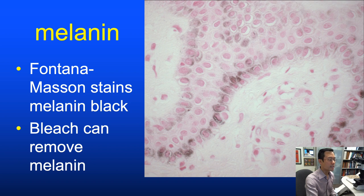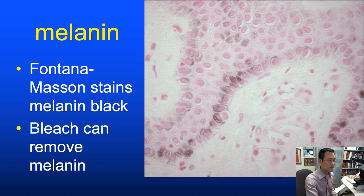The Fontana-Masson stain for melanin is also one I rarely order, as melanin is usually apparent on H&E. I order it regularly when trying to rule out vitiligo and distinguish it from post-inflammatory hypopigmentation—looking for minimal residual melanin to make a definitive assessment. Melanin can sometimes be too prominent and obscure cytologic interpretation, so a bleaching step can be done to remove it.